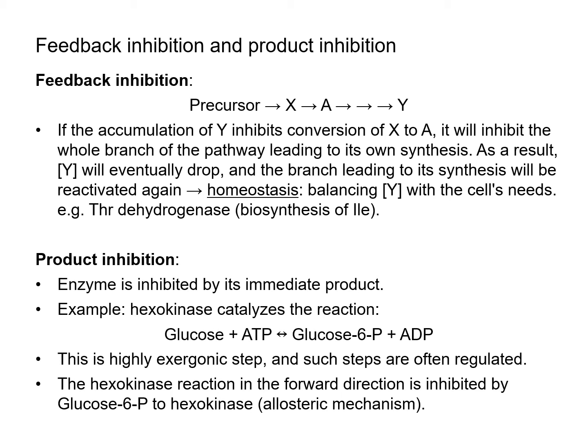Another principle for regulating metabolic pathways is product inhibition, where an enzyme is inhibited by its immediate product. An example is hexokinase, which catalyzes the reaction of glucose + ATP → glucose-6-phosphate + ADP. This reaction is highly exergonic, so it would happen a lot. Therefore it must be regulated, and hexokinase is specifically inhibited by its product, glucose-6-phosphate, using allosteric mechanisms that we will discuss later in this lecture.